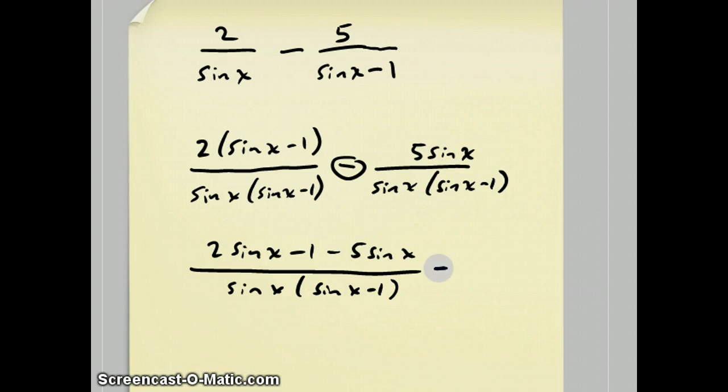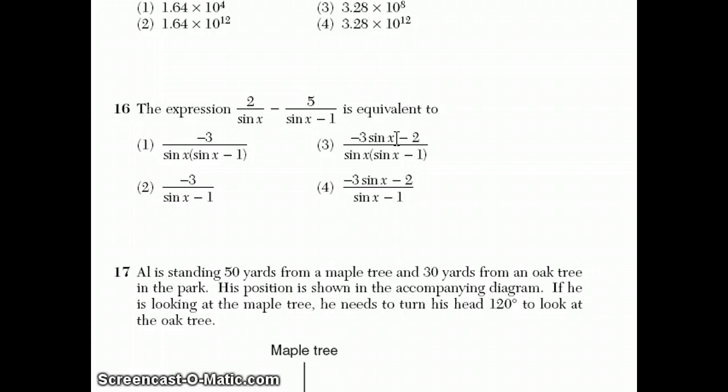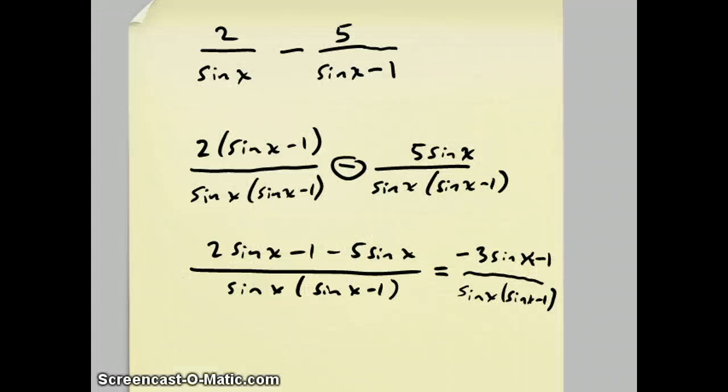I find it's better to not multiply these things on the bottom together, because maybe something will cancel out later. 2 sine x minus 5 sine x is negative 3 sine x minus 1. And on the bottom, we have sine x times sine x minus 1. Let's look at the answer choices. Maybe they multiplied those together in the answer choices. No, they didn't. So, when I multiply this, this 2 needed to get multiplied through. Nobody's perfect.